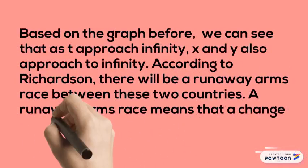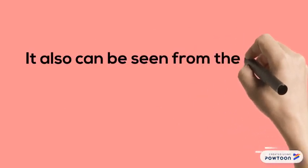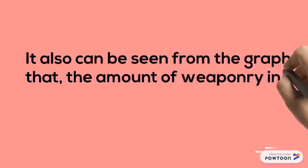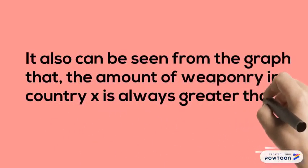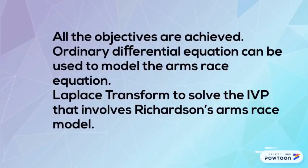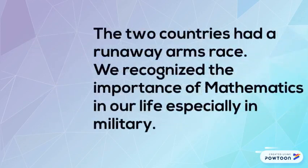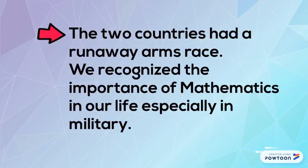According to Richardson, there will be a runaway arms race between these two countries. A runaway arms race means that a change in one country indirectly causes a change in the other country. It can also be seen from the graph that the amount of weaponry in country X is always greater than country Y. Overall, all the objectives are achieved. Ordinary differential equations can be used to model the arms race equation. We can use Laplace transform to solve the IVP involving Richardson's arms race model. Based on the model, the two countries had a runaway arms race. We also recognize the importance of mathematics in our lives, especially in the military.